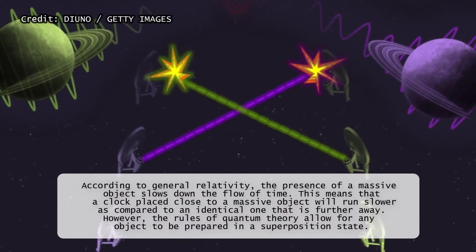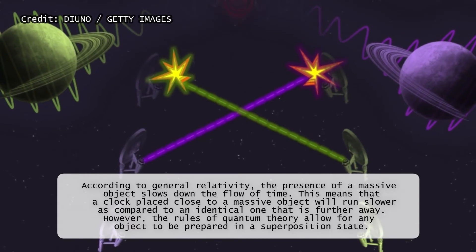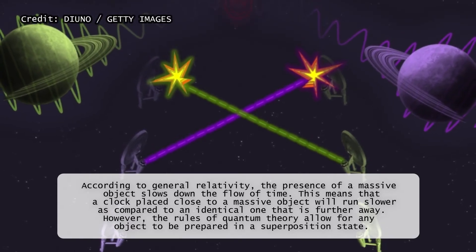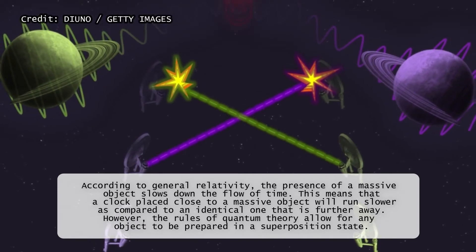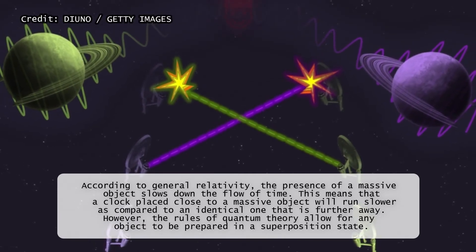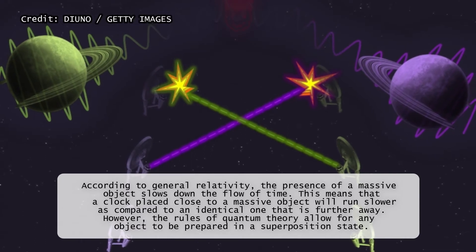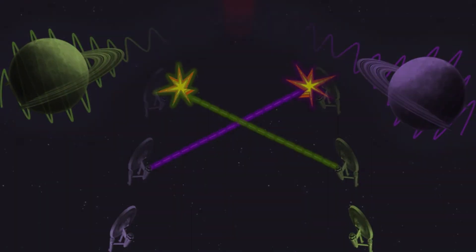It means that temporal order cannot be described by any predefined local variables. A classical notion of a causal structure is therefore untenable in any framework compatible with the basic principles of quantum mechanics and classical general relativity.